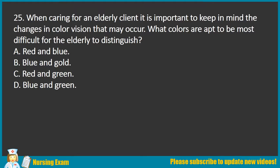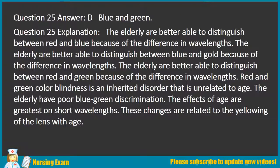Question 25. When caring for an elderly client, it is important to keep in mind the changes in color vision that may occur. What colors are apt to be most difficult for the elderly to distinguish? A. Red and Blue. B. Blue and Gold. C. Red and Green. D. Blue and Green. Answer: D. Blue and Green. Explanation: The elderly are better able to distinguish red and blue, blue and gold, and red and green due to differences in wavelengths. Red and green color blindness is an inherited disorder unrelated to age. The elderly have poor blue-green discrimination; these changes are related to the yellowing of the lens with age.